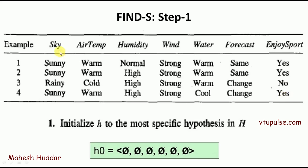The possibilities for Sky are Sunny and Rainy. Air Temperature has two possibilities: Warm and Cold. Humidity has two possibilities: Normal and High. Wind has one possibility: Strong. Water has two possibilities: Warm and Cool. And Forecast has two possibilities: Same and Change.